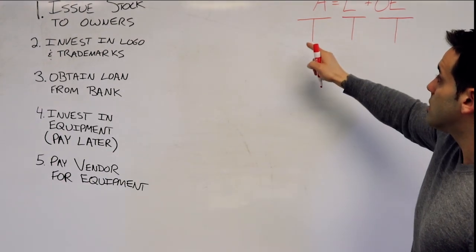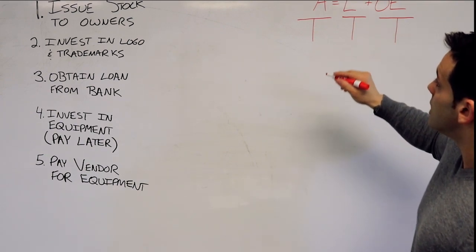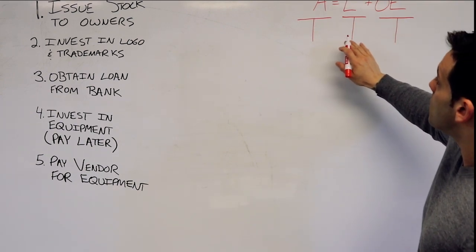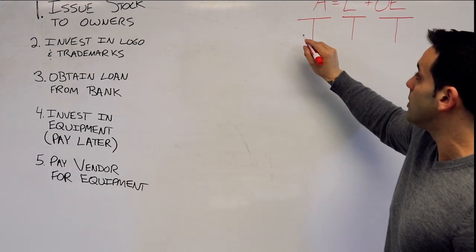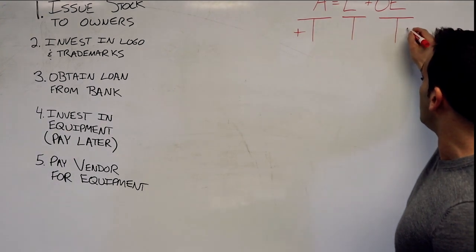And a nice little cheat sheet for helping analyze these journal entries and transactions is this. So we have our T-accounts beneath each account or type. So we're going to put plus signs on the outside.